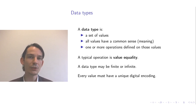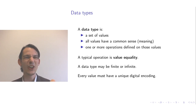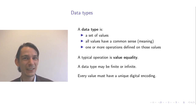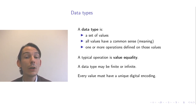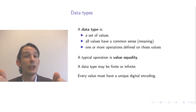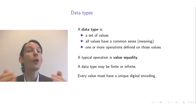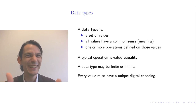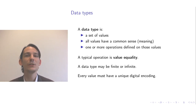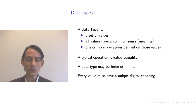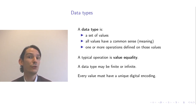Because every value must have a unique digital encoding — different values have different encodings — you can see how value equality is implemented. If you have the same value, then they must have the same digital encoding, because different values cannot be encoded by the same sequence of zeros and ones. So checking whether two values are equal is very simple: just check whether they have the same encoding.